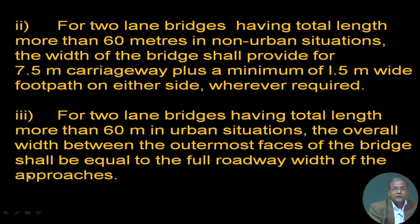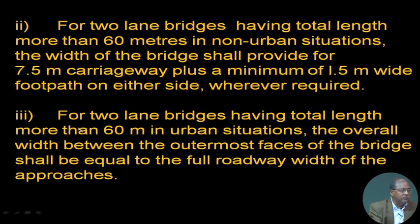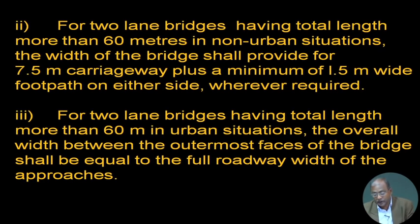For two-lane bridges having total length more than 60 meters — what we call major bridges — the width shall provide for a 7.5-meter carriageway plus a minimum 1.5-meter-wide footpath on either side wherever required. You must give at least 1.5 meters of footpath. The road part can be easily expanded later, but once the bridge is done, it is very difficult to expand.